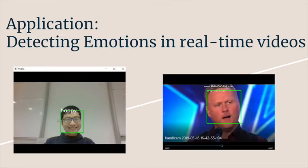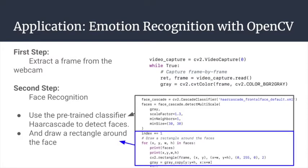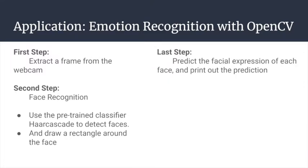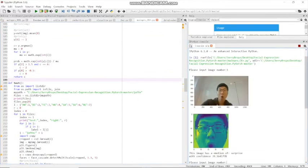We then apply the technology to a real-time video. To achieve this, we first use OpenCV to extract each frame. Then we use a pre-trained Haar cascade classifier to detect faces and draw a rectangle around each face. Finally, we predict the facial expression of each face and print out the prediction with its confidence level. Let's see a demo of our project — we have test files here and we'll go through them one by one, showing the original image, the detected and cropped face, the final prediction, and the confidence level.